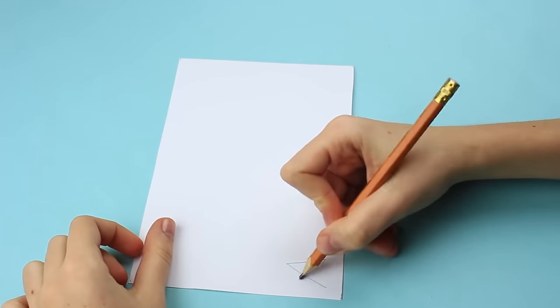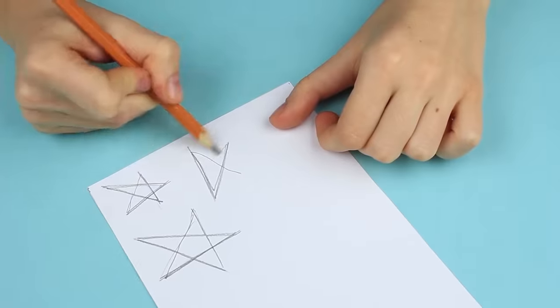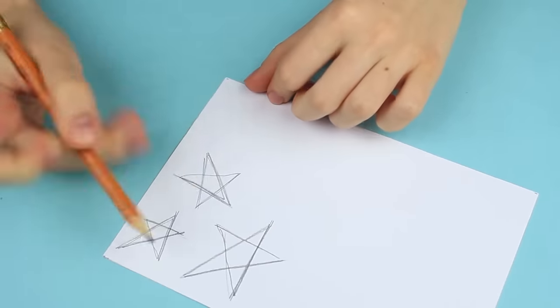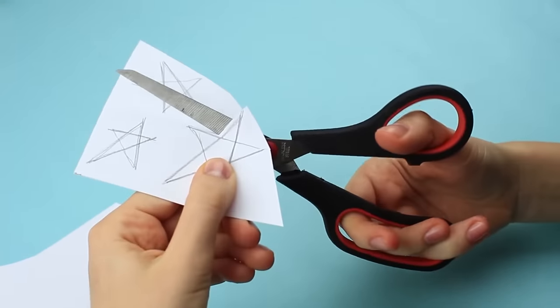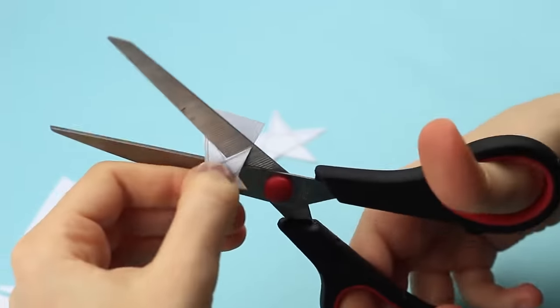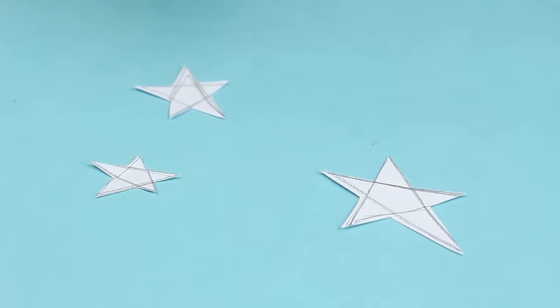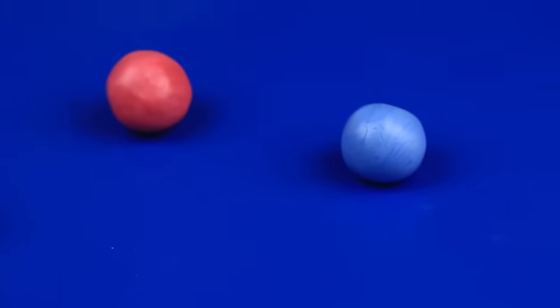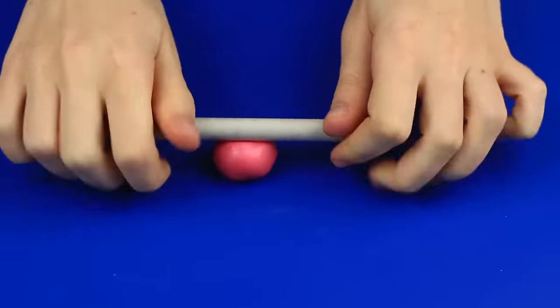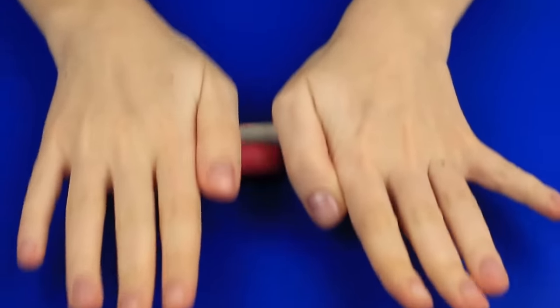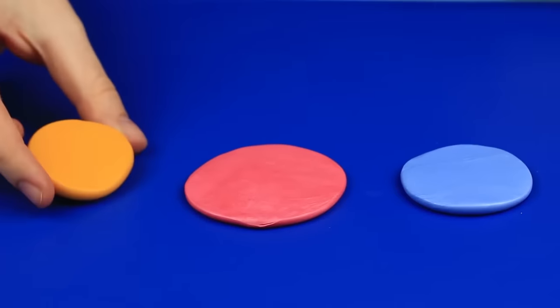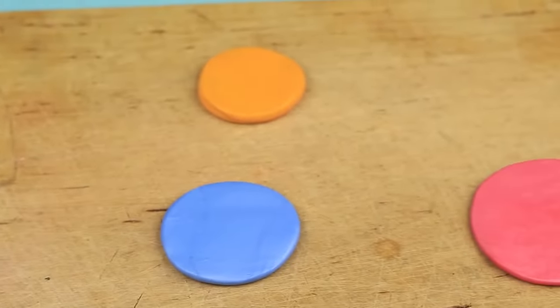Begin with making templates. Draw three five-pointed stars on thick paper. They can be of different size and not quite regular shape. Cut them out. This is it! Now take three polymer clay pieces of each color and roll up balls. Roll out flat. Use a small rolling pin. The circles should not be too thin. The size varies as the stars will not be equal.